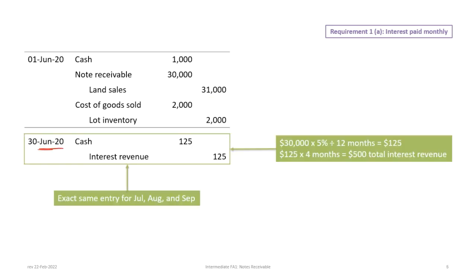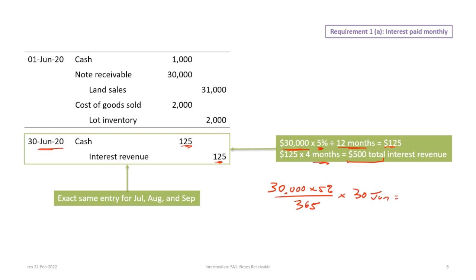On June 30th, we record our first interest payment. This is an interest-bearing note, so the calculation is the principal on the note times 5% divided by 12 months — that's $125 per month, and the total interest payable on this note is $500 spread over a four-month period. The interest revenue is $125 and the cash received from the customer is $125. An alternative calculation would be $30,000 times 5% divided by 365 days times 30 days in June, giving $123.29.